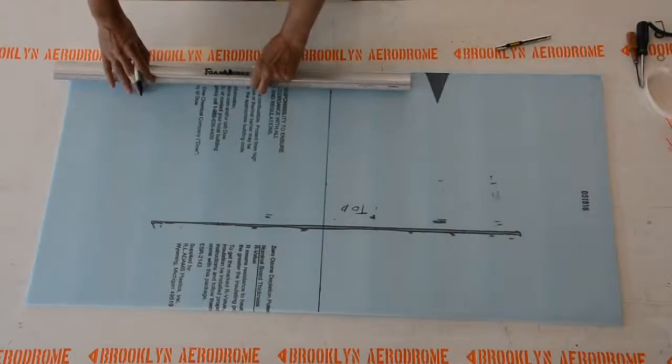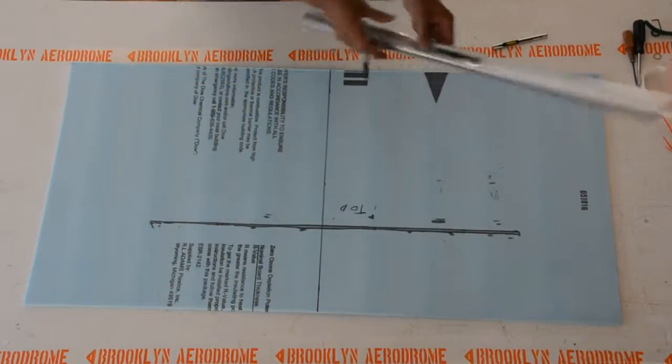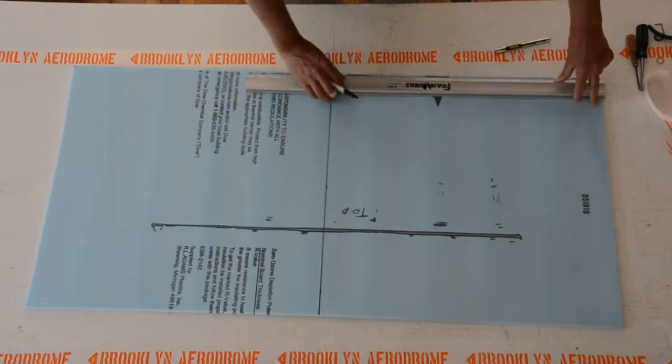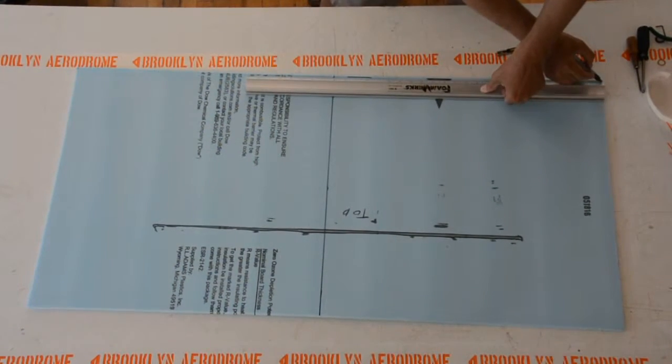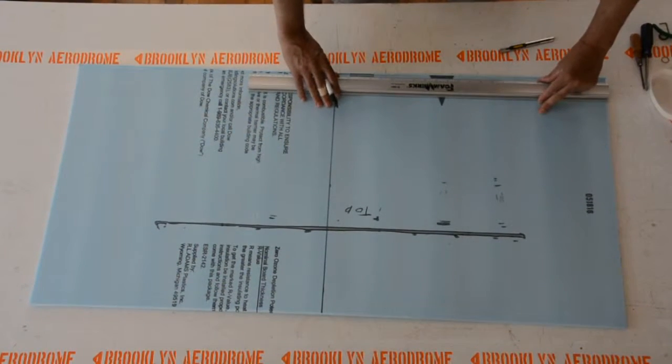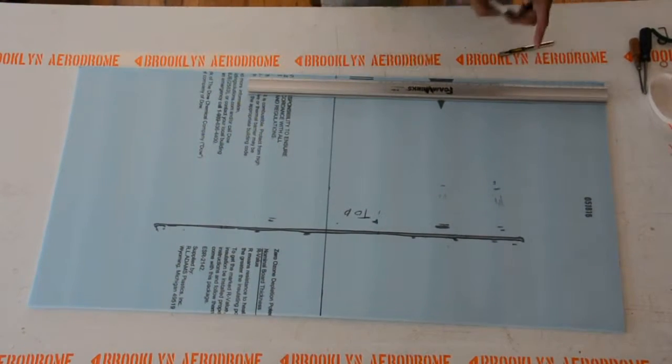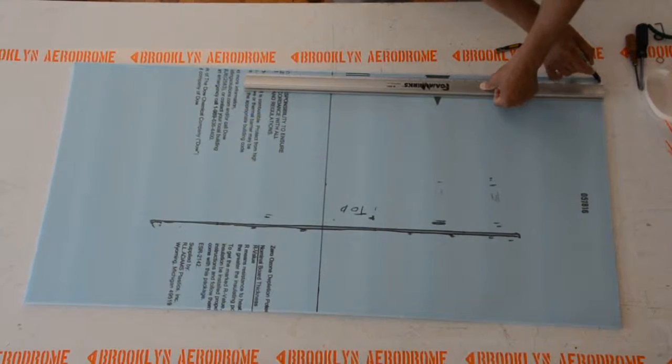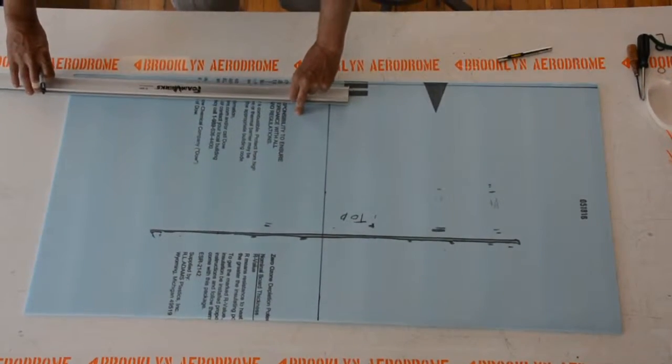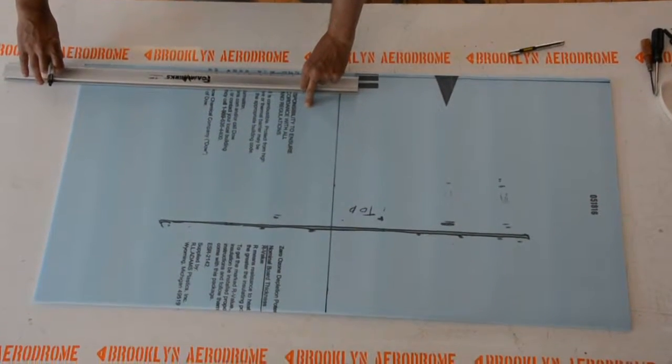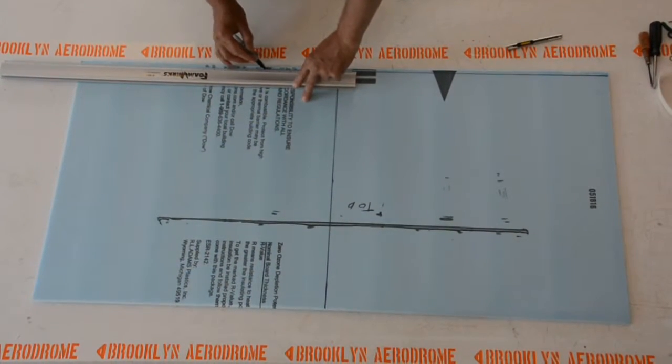I'm going to redo this edge and just cut it so it's square. I'll just do that real quick. Just about a quarter of an inch in. It just needs to be straight.